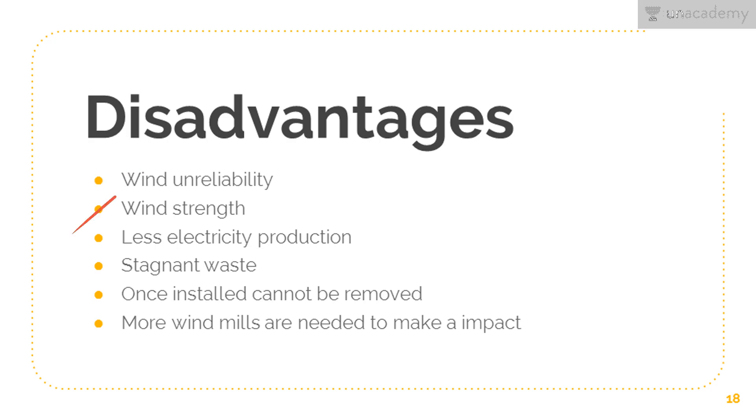The wind strength may be high speed or low speed, resulting in less electricity production because it depends on the wind. If there is no wind for certain days, there will be no electricity production. It will become a stagnant waste because it's just a tower standing there. Once installed, windmills cannot be taken out as it will provide very bad damage to the land area. That space will be wasted if the windmill is of no use. More windmills are needed to make an impact. If you place one mill in one area, it's not enough to provide electricity for the whole area. You need lots of windmills to generate sufficient electricity for household purposes.